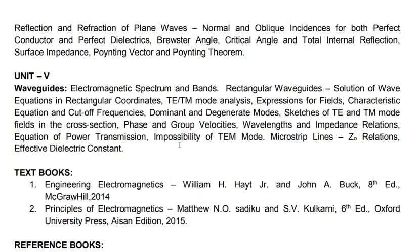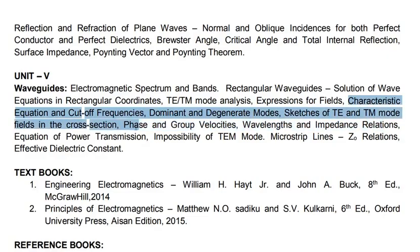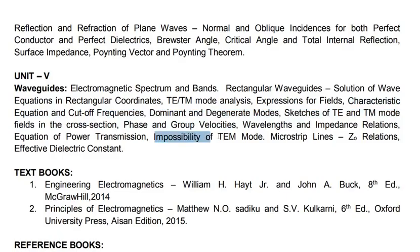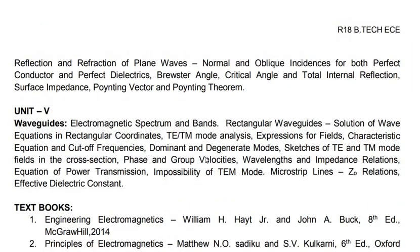In the fifth unit we have wave guides. This unit was earlier part of the microwave engineering subject but is now included in electromagnetic field theory and waves. Here we have lengthy derivations — the first is the solution of the wave equation in rectangular coordinates, then the transverse electric and transverse magnetic mode equations. Smaller derivations include the characteristic equation, cutoff frequencies, dominant and degenerate modes, TE and TM modes, phase and group velocities, wavelengths, and impedance relations. Another important topic in this unit is the impossibility of the transverse electromagnetic mode.